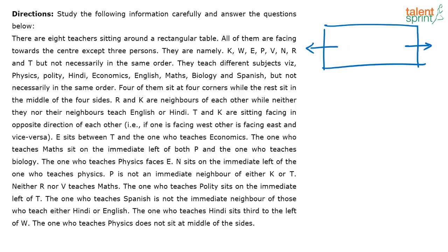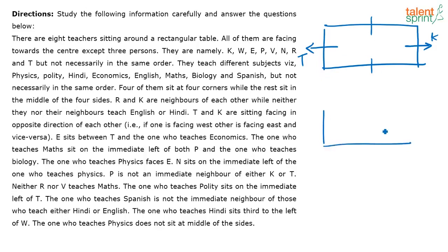They have also given that T and K are sitting facing opposite to each other. I can keep T and K either here or here — that is up to me. In this question, nothing like 'the person sitting on the longer side or shorter side' is given; they've just mentioned there is a rectangular table and these people are facing opposite to each other. I am going to choose this placement for T and K.